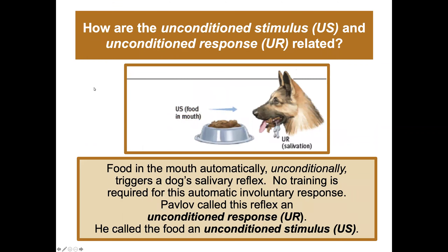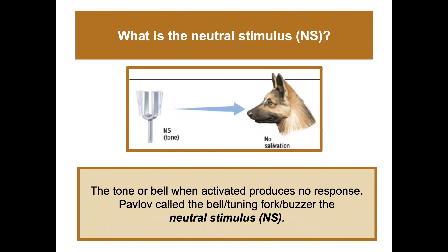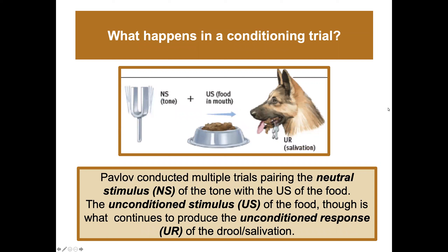Food in the mouth automatically and unconditionally triggers a dog's salivary reflex — no training required. This is the unconditioned response, and Pavlov called the food the unconditioned stimulus. The tone or bell produced no response at first — Pavlov called it the neutral stimulus because it initially elicited no salivation. He then conducted multiple trials pairing the neutral stimulus with the food.